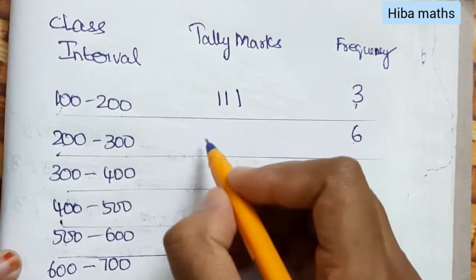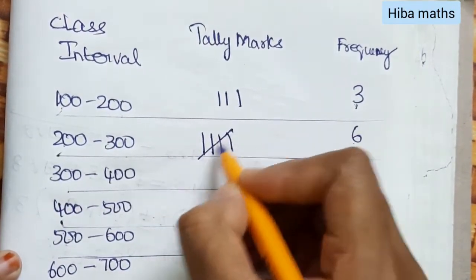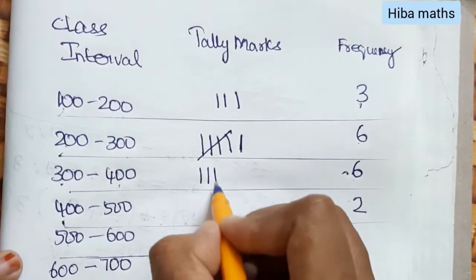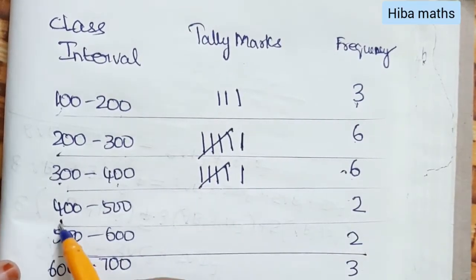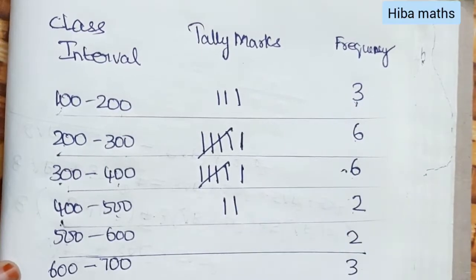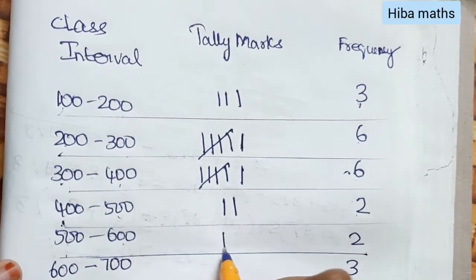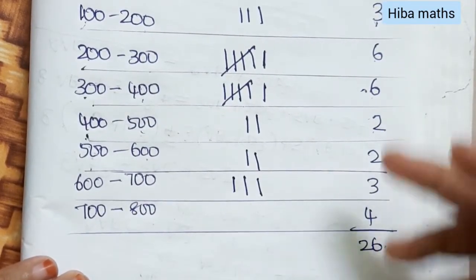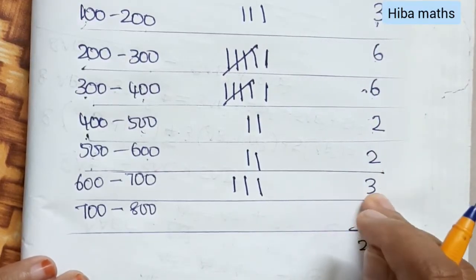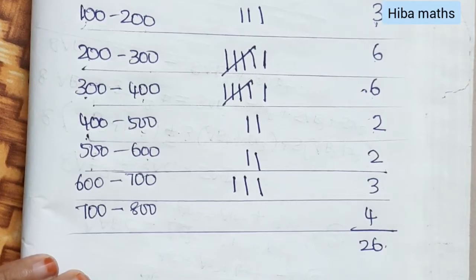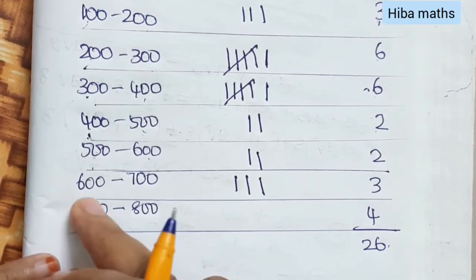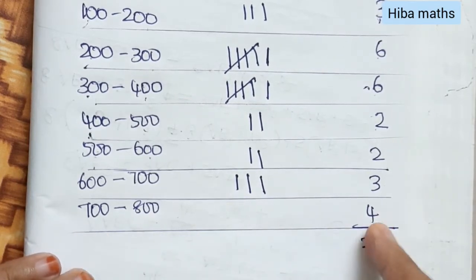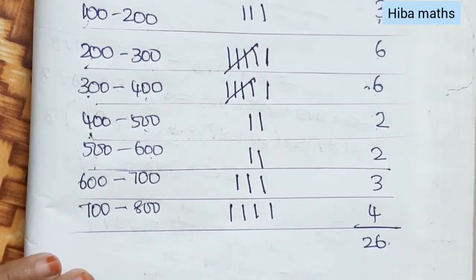Now let's count the frequencies. The interval 300 to 400 has 6 values — counting: 1, 2, 3, 4, 5, 6. The interval 400 to 500 has 2 values. The interval 500 to 600 has 2 values. The interval 600 to 700 has 3 values — 1, 2, 3. The interval 700 to 800 has 4 values — 1, 2, 3, 4. That's how we get the frequency table.